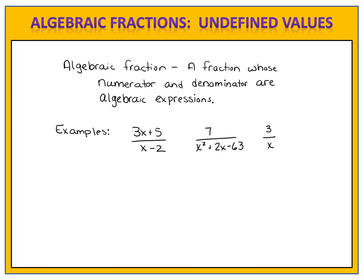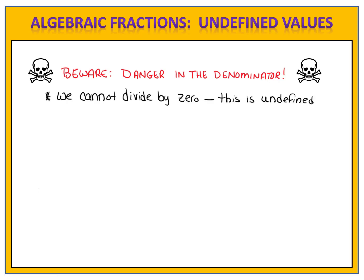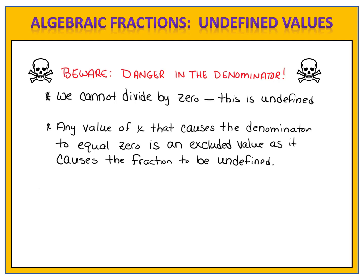When working with algebraic fractions, we often have variables in the denominator, and we have to be very careful because there is danger in the denominator. We know that we cannot divide by zero. Division by zero in mathematics is undefined. Therefore we have to use extreme caution. Any value of x that causes the denominator to equal zero is an excluded or undefined value, because that value would cause us to have division by zero, making the fraction undefined.